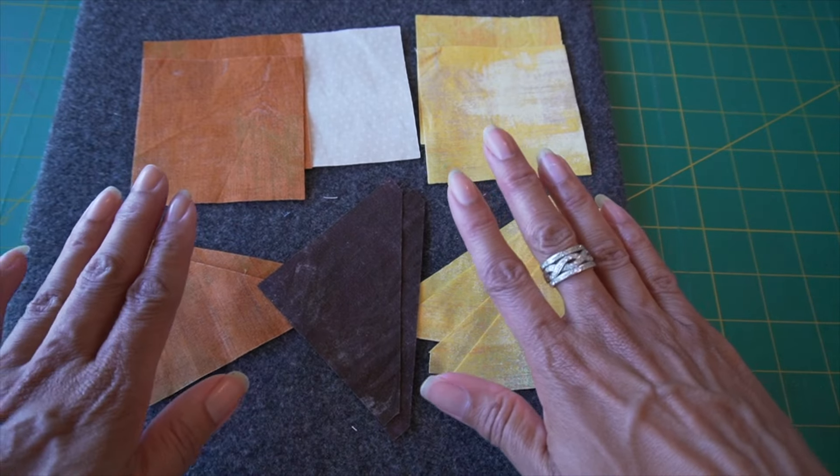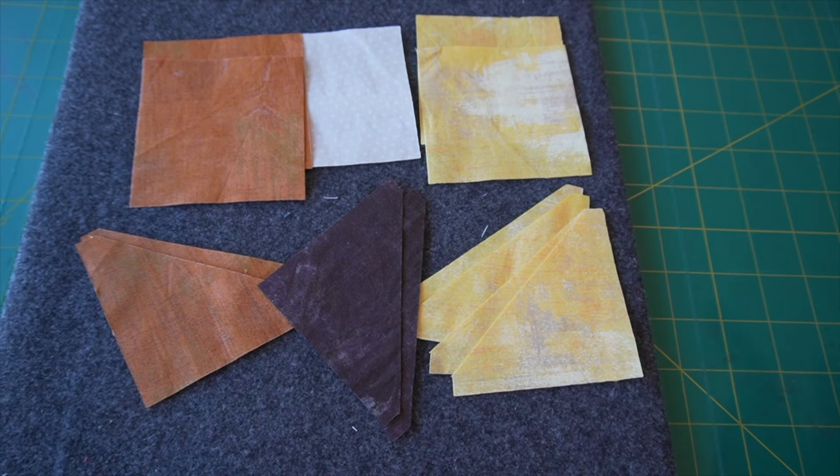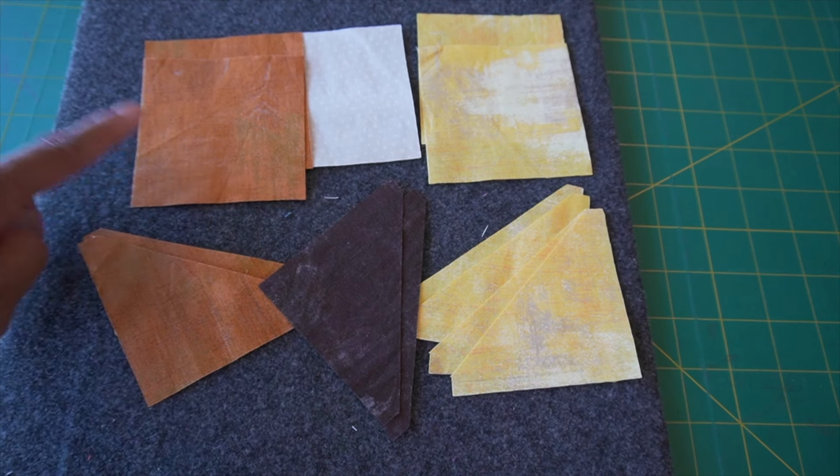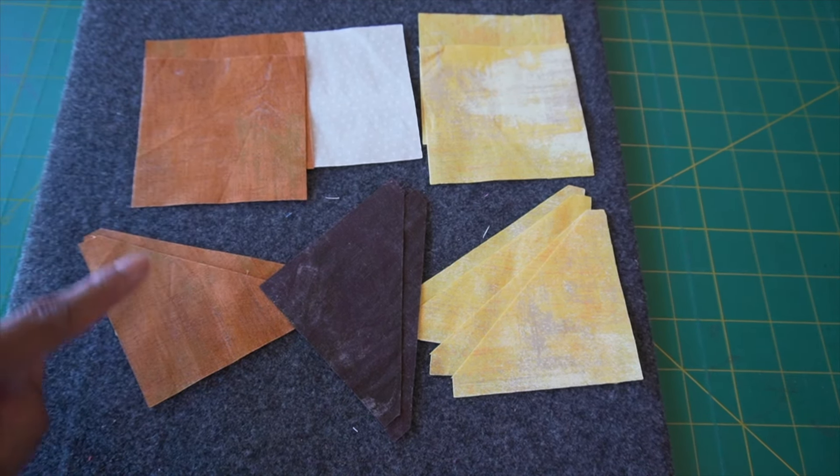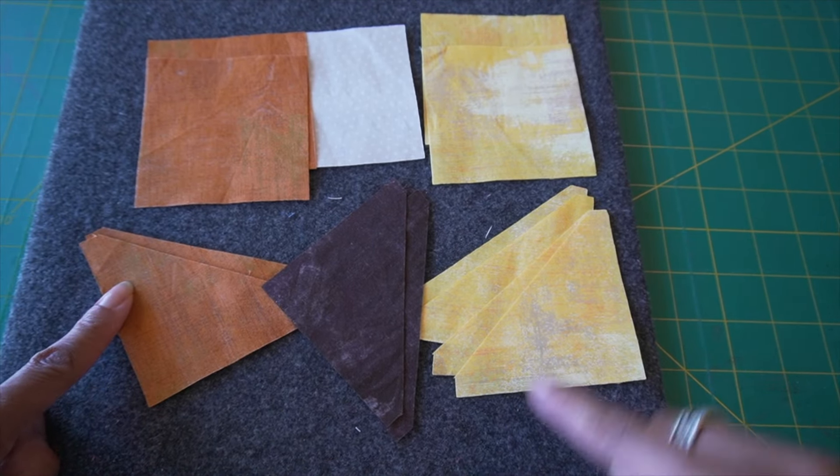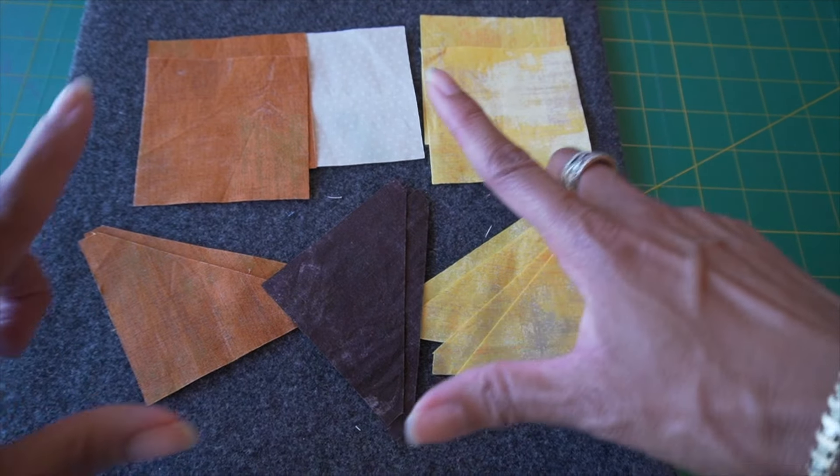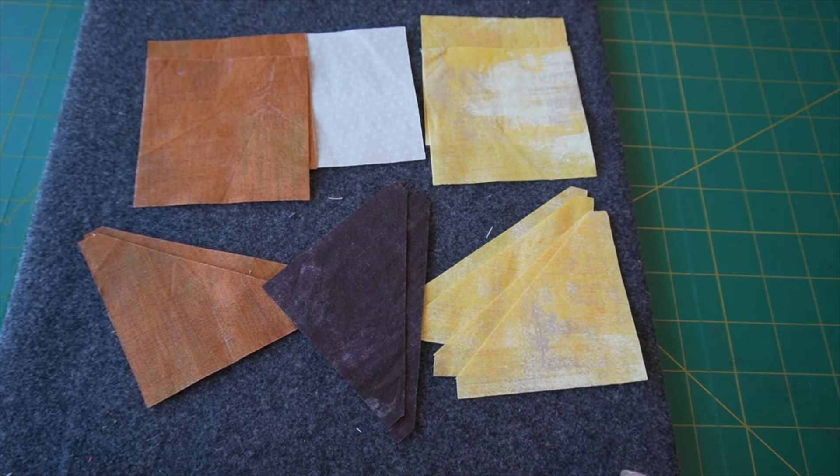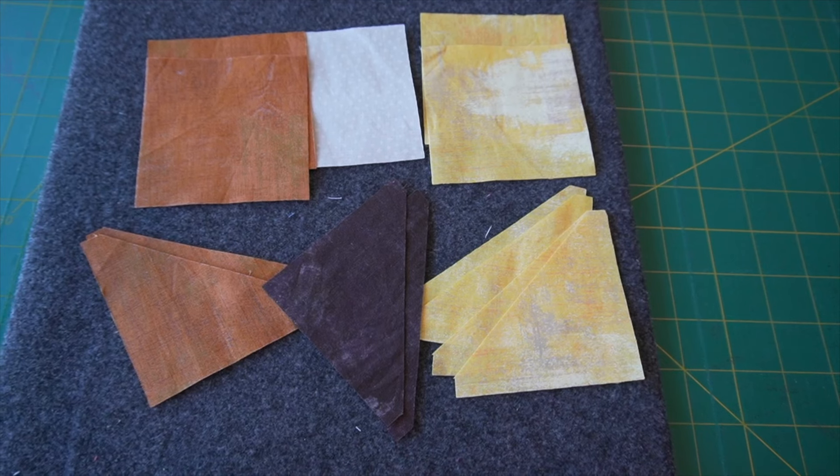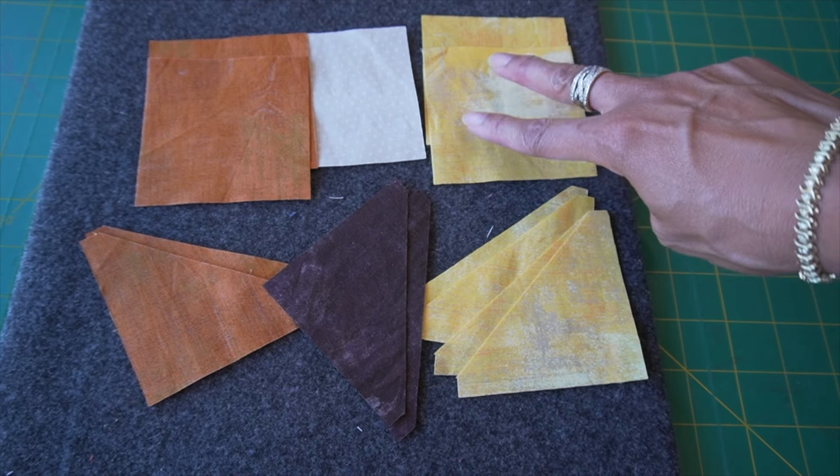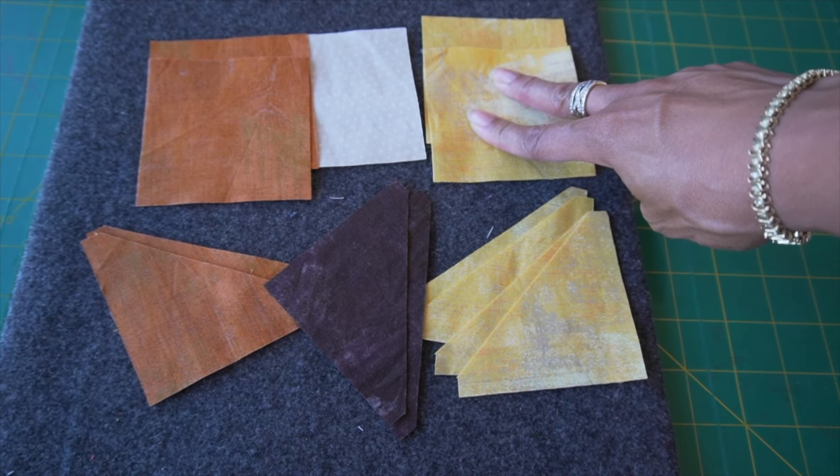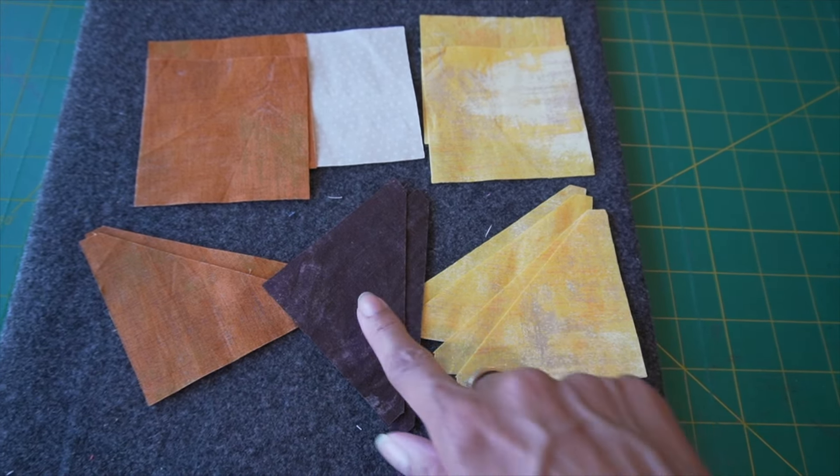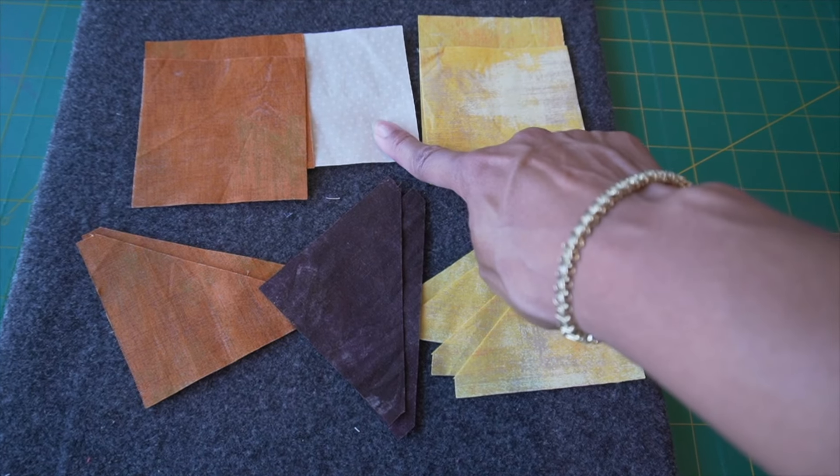Here are all the elements for the attic window block cut out. We have two of the orange or burnt oranges here, the squares, and I used die number one to cut that out, and two of the half-square triangles. And remember those two larger half-square triangles that I was saying I have to break down into components in order to cut out because I'm using my AccuQuilt dies? Well, I have two of the squares, which are die number one, and I have four half-square triangles, which I use die number three to cut out.